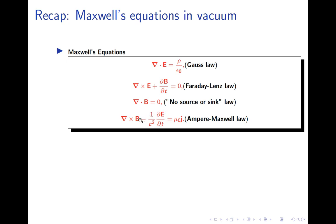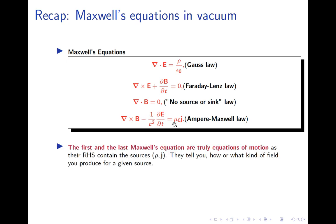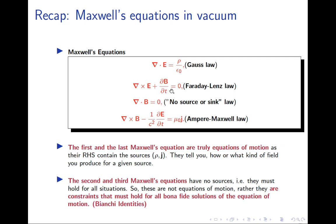I also noted that the first and fourth equations are truly equations of motion — relating cause (rho and J) to effect (E and B fields). The second and third equations are constraints on solutions: they are not equations of motion but must be satisfied by valid solutions. These are also known as Bianchi identities.